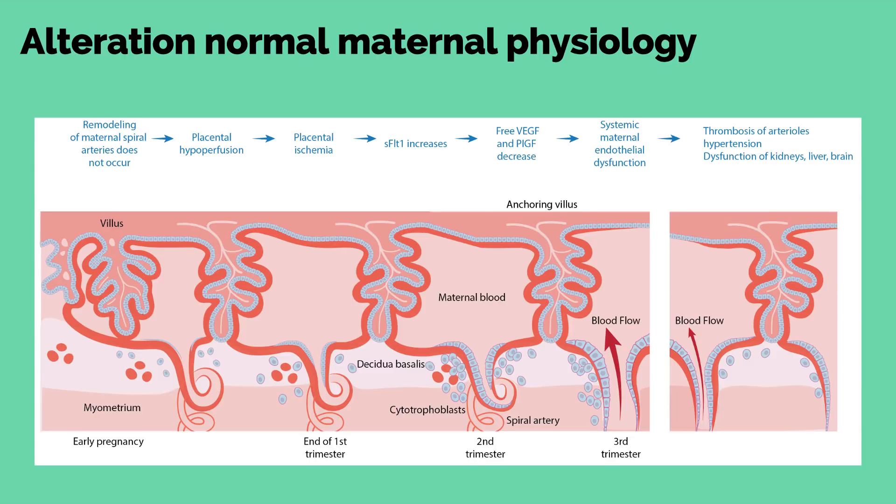It is unclear exactly how preeclampsia alters the normal regulation of maternal blood pressure. One theory states that there is a two-step process. First, there is a lack of remodeling of the spiral arterial intima by the cytotrophoblastic cells, therefore creating less capacitance in the placental bed. Second, placental hypoxia damages the syncytium and alters the pro-angiogenic and anti-angiogenic balance, leading to increased oxidative stress and endothelial dysfunction.